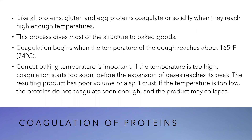Coagulation of proteins is another effect which happens during baking. Like all proteins, gluten and egg proteins also coagulate and solidify when they reach high temperatures. This is the process which gives most of the structure to baked goods. Coagulation begins at 74 degrees centigrade. That's why correct baking temperature is extremely important. If the temperature of the oven is too high, coagulation starts too quickly before the expansion of gases has reached its peak.